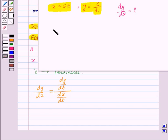Now we already know that dy by dx is equal to dy by dt upon dx by dt.